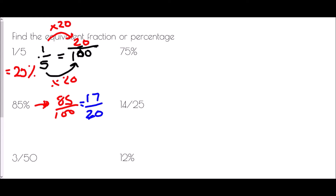For 3 over 50, to turn that into a percentage I want a fraction over 100. How do I turn 50 into 100? I multiply by 2, so I do the same at the top: 3 times 2 is 6. Because I have this as a fraction over 100, I can say that three fiftieths is exactly the same as 6 percent.